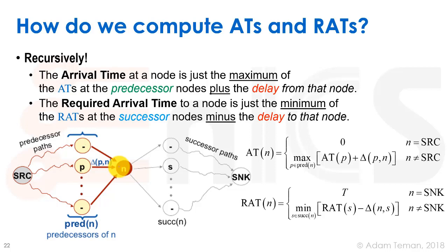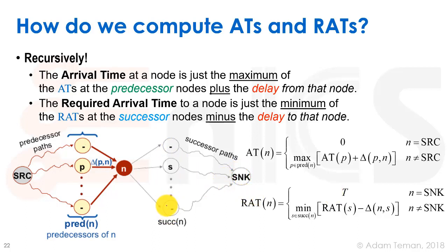Similarly, the required arrival time is the minimum of all required arrival times at successor nodes minus the delay to that node. At the sink, the RAT is T — the clock period, which is the final required arrival time. For each other node, we take the minimum over all successors of (RAT at successor − edge delay). We already know the RAT at successors recursively, so we subtract the edge delay and take the smallest value as the required arrival time.